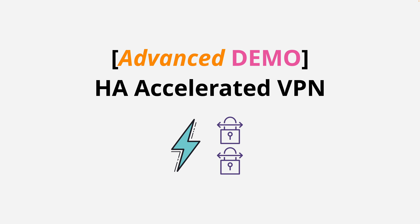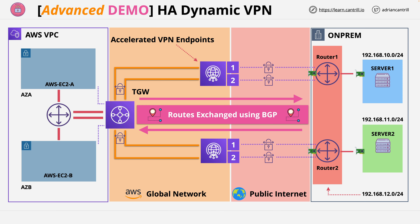Welcome to this advanced demo lesson where you're going to get the experience of implementing a dynamic, highly available, accelerated VPN which uses BGP for route advertisement. With this demo, you won't need to have any local infrastructure. We're going to create both sides of this infrastructure using CloudFormation — the AWS side on the left and the on-premises side on the right — both within AWS using a single one-click deployment, rather than requiring your own on-premises infrastructure.